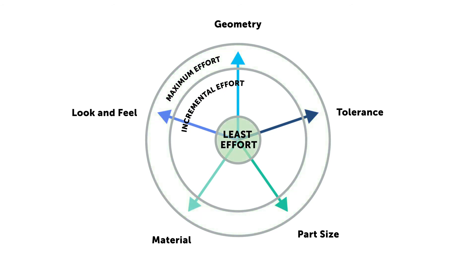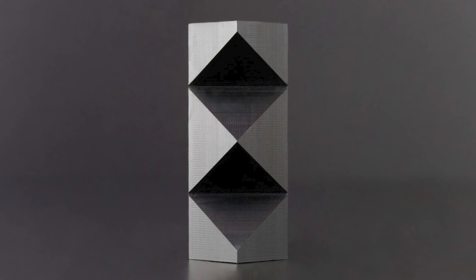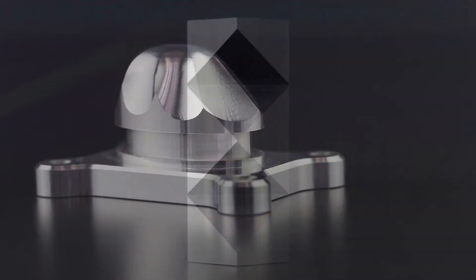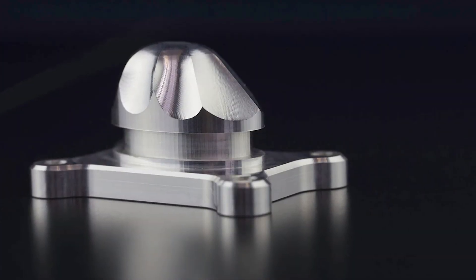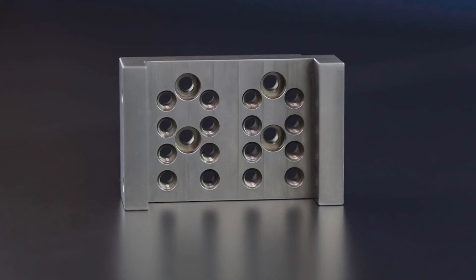Let's take a look at least effort for CNC machining. Designing to these parameters is good for low requirement applications like the test fixture. For materials, least effort can be Delrin for plastic, 6061 aluminum for soft metal, and 1018 steel for hard metals.